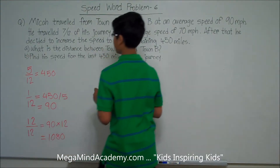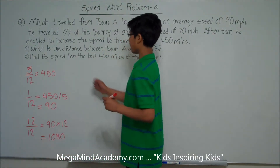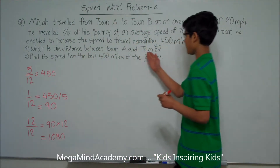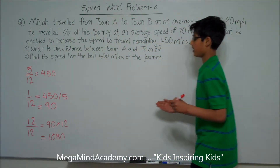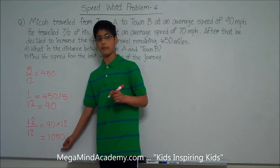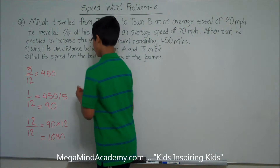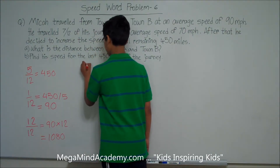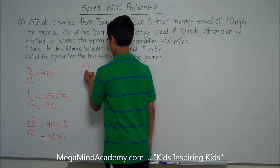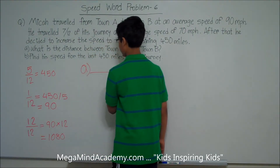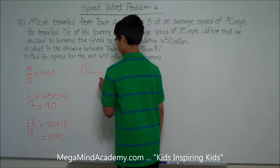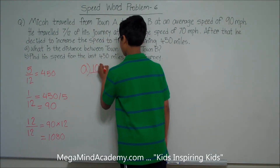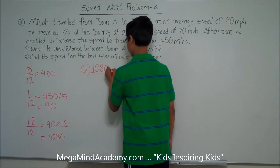12/12ths equals 1,080. So this means that the distance between town A and town B is 1,080 miles. So A, the distance between town A and town B is 1,080 miles.